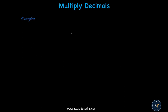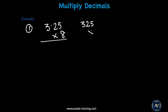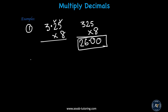The next thing we'll learn is how to multiply decimals. Let me give you a basic problem: 3.25 multiplied by 8. When you multiply decimals, forget about the decimal first. So multiply 325 by 8: 8 times 5 is 40, carry 4. 8 times 2 is 16, plus 4 is 20, write 0 carry 2. 3 times 8 is 24, plus 2 is 26. Now count how many decimal digits you have in total — you have 2. So move the decimal two places from right to left. The answer is 26.00.